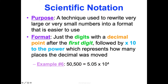The format is always the decimal point after the first digit, then how many times you had to move the decimal. In 50,500, the decimal is technically at the end. To get it to right after the 5 — which is where we want it in scientific notation — we count: move it one, two, three, four times. That's where the exponent four comes from — it represents how many places we moved the decimal.